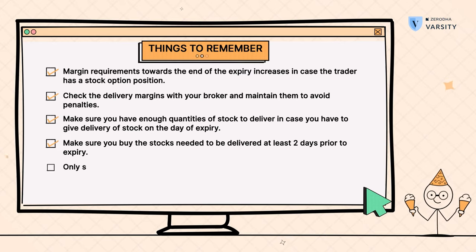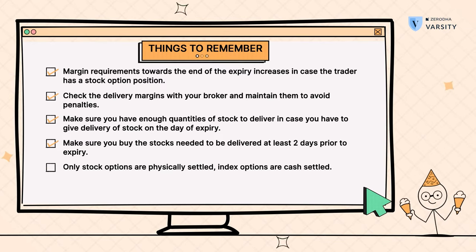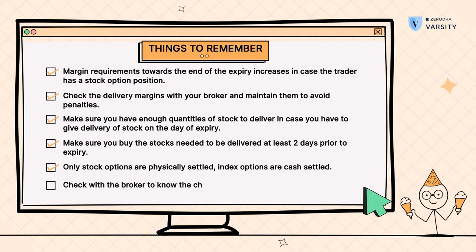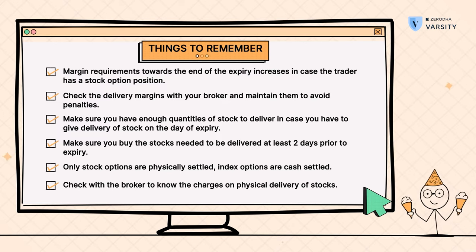Only stock options are physically settled. All index options are cash settled. Most brokers charge a physical delivery brokerage, so please check with your broker to figure out how much they are charging you to facilitate physical delivery of stocks. Personally, I am not a big fan of physical settlement. Therefore, I ensure that I exit all my option positions before expiry to avoid getting into the hassle of physical settlement.